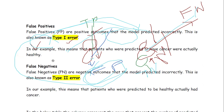To summarize once more: Type 1 error means false positive, and Type 2 error means false negative. I hope this is clear to you now. Thank you.